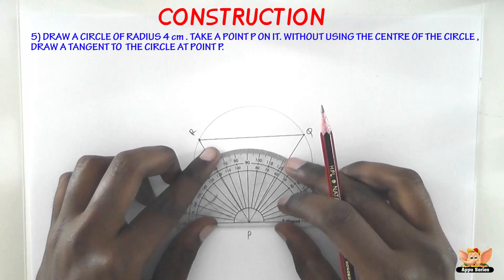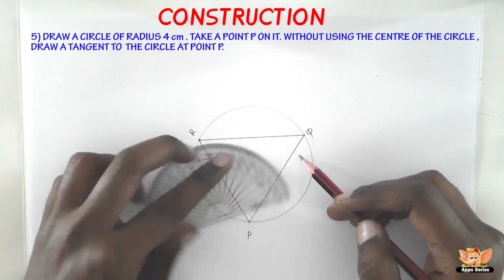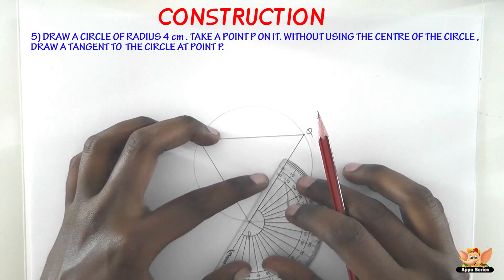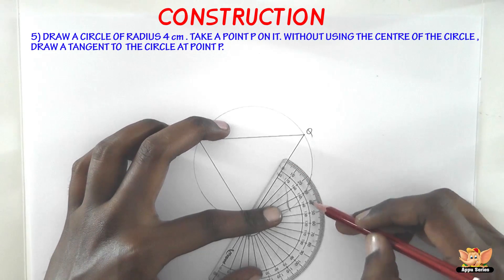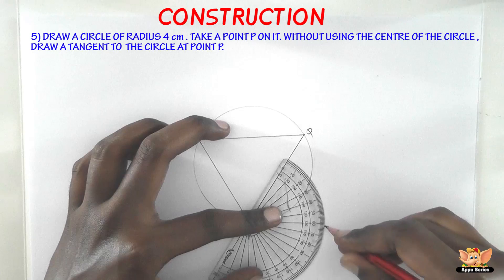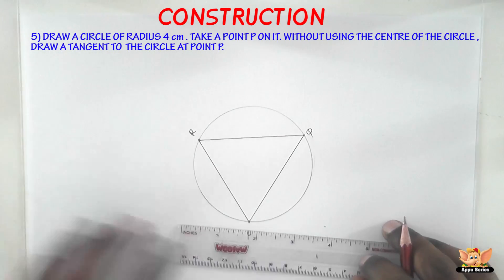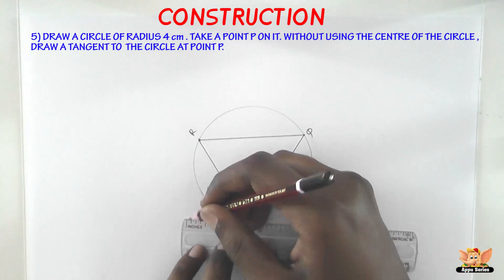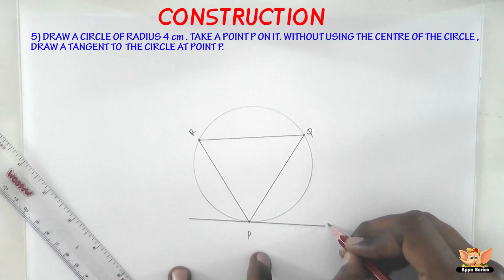So now we need 62 degrees from here. Let's keep this protractor here and construct an angle of 62 degrees. So use this point and join it to P and extend it further. Here we are — we've got a tangent here.